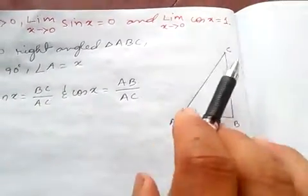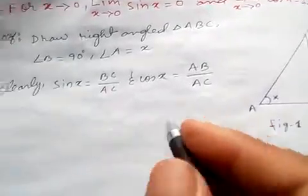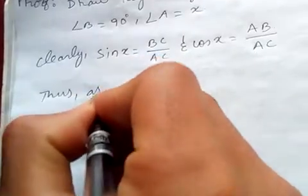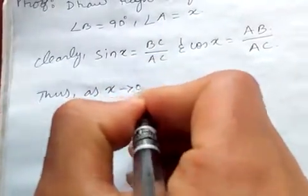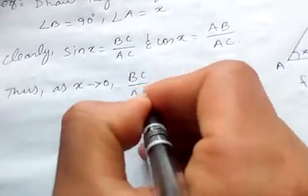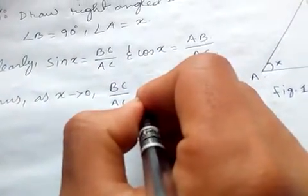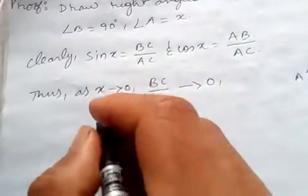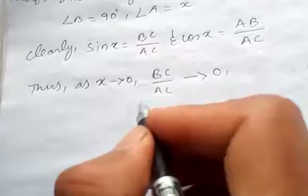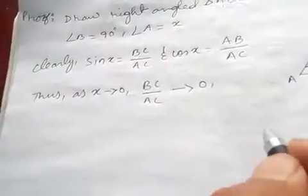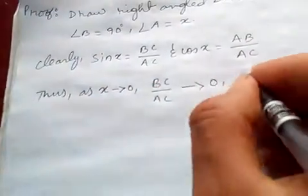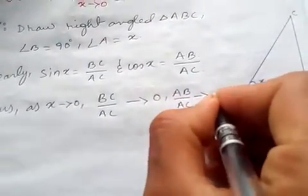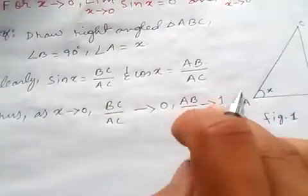Consequently, BC becomes smaller and smaller. Thus, as x tends to 0, BC by AC also tends to 0. And AB by AC approaches to 1.